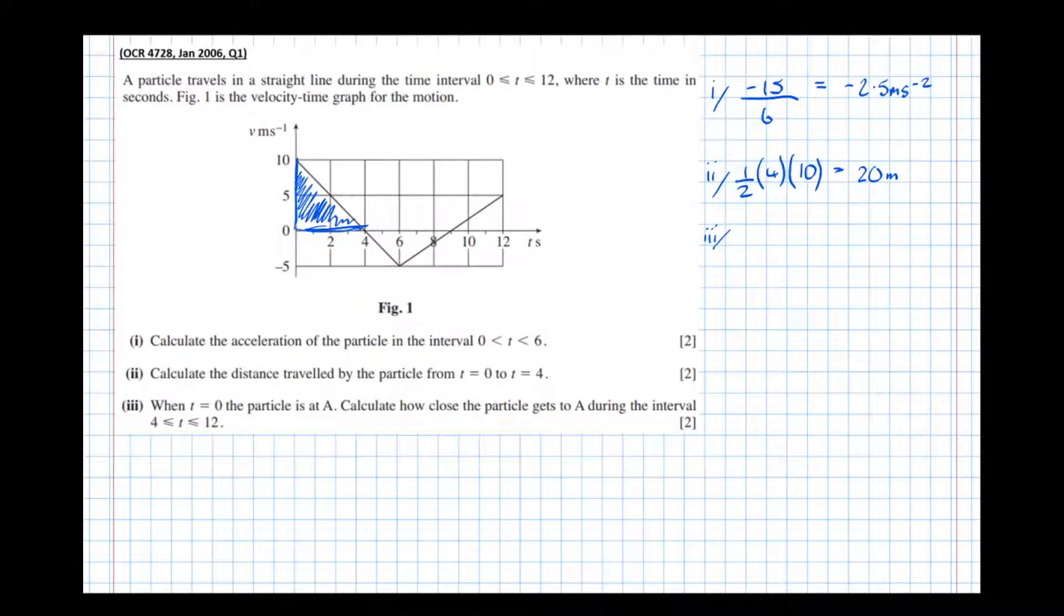Part 3. We've just discovered in the previous part that at t equals 4, which is there, it's 20 meters away from point A. So at t equals 0 it's at A. 4 seconds later it's 20 meters away.